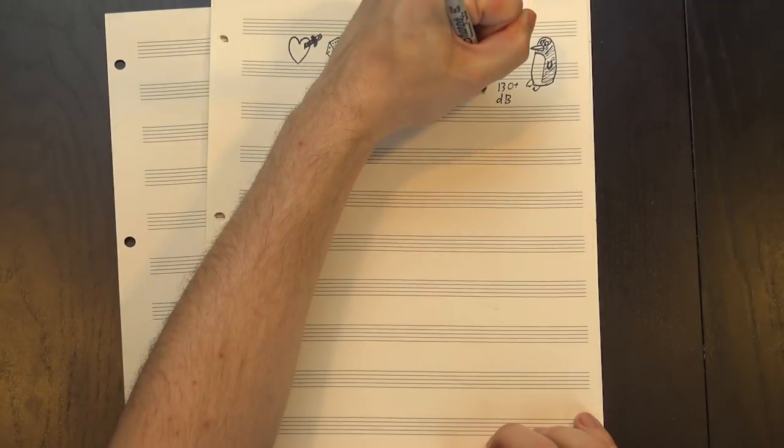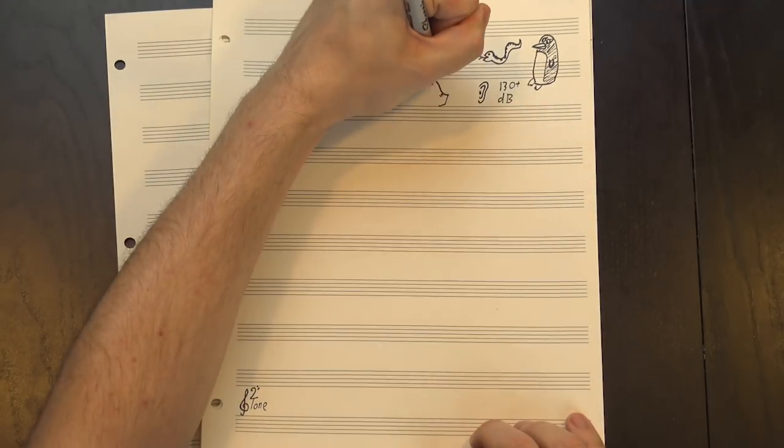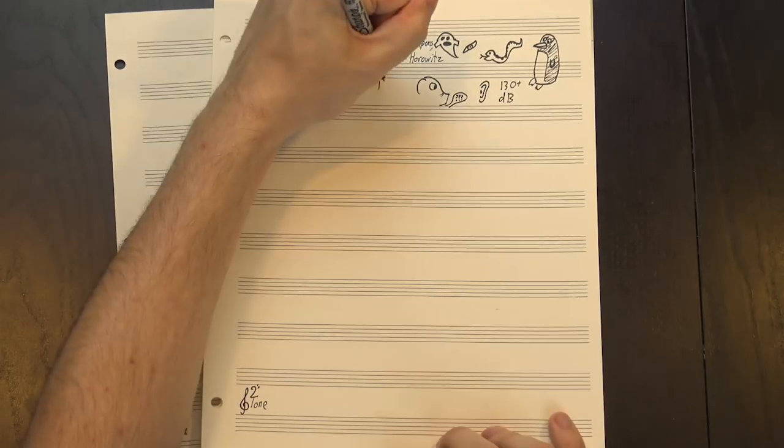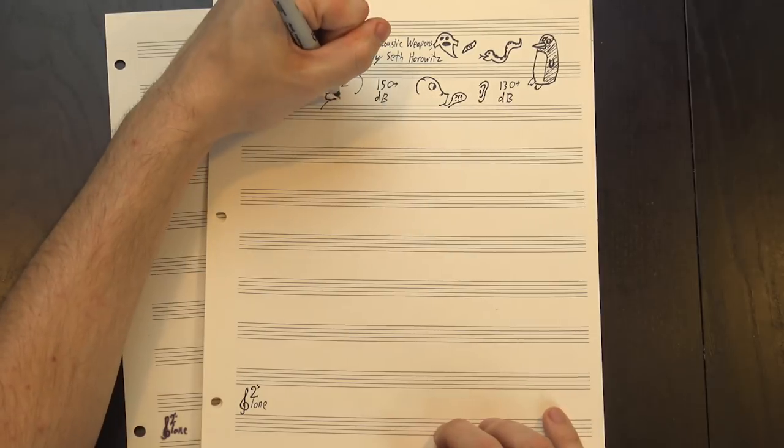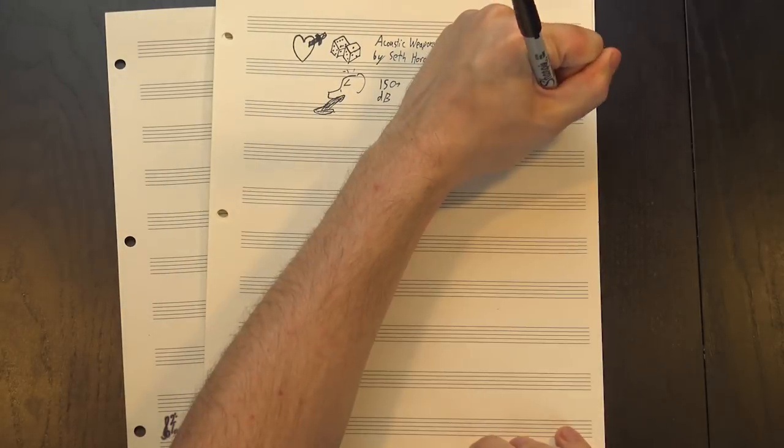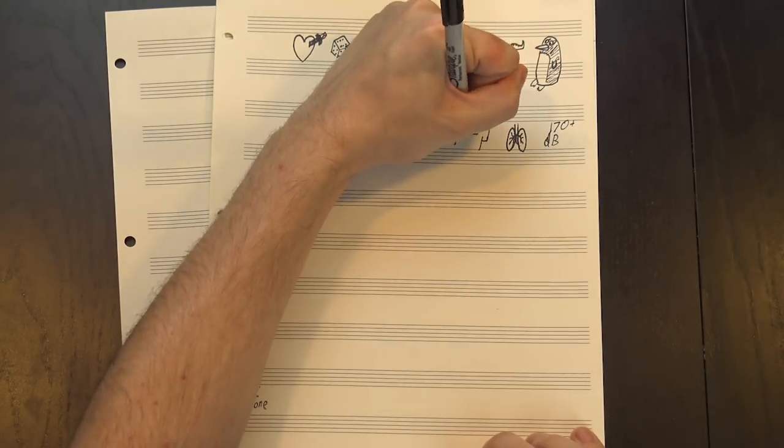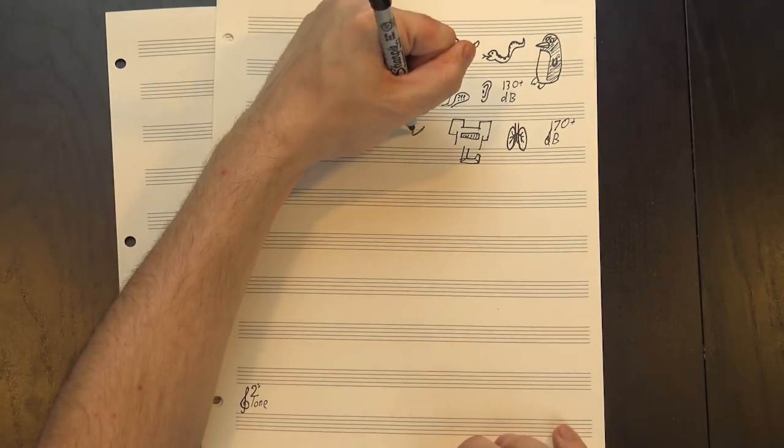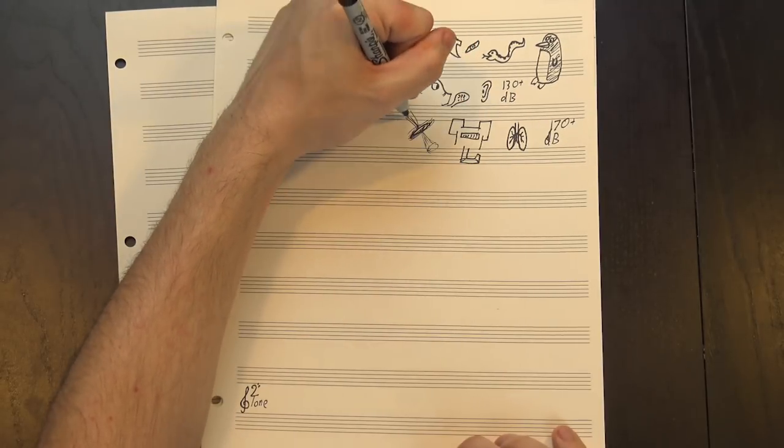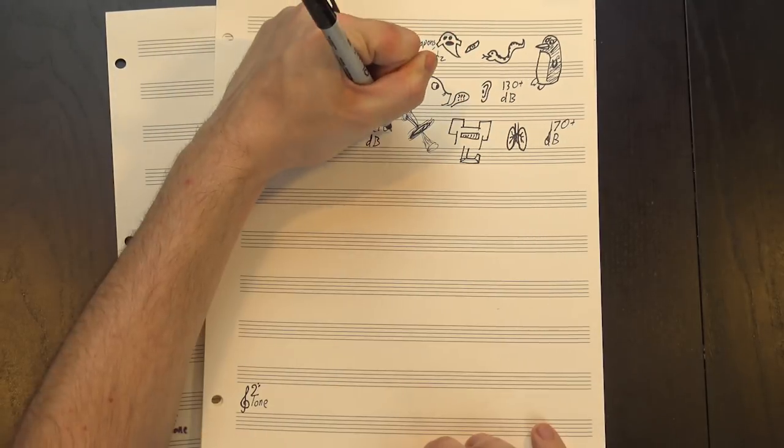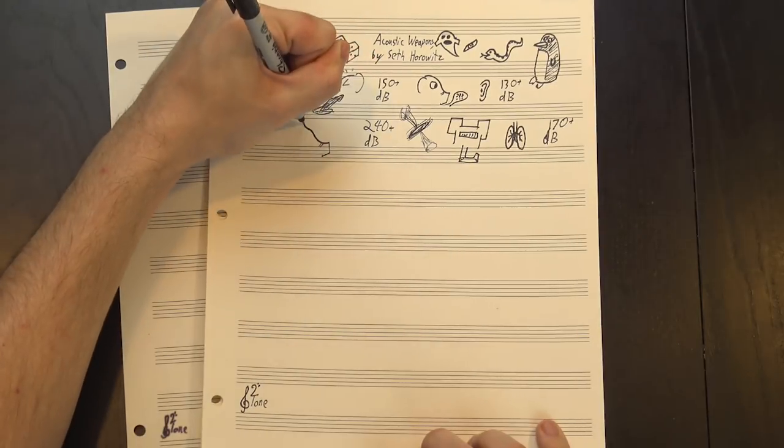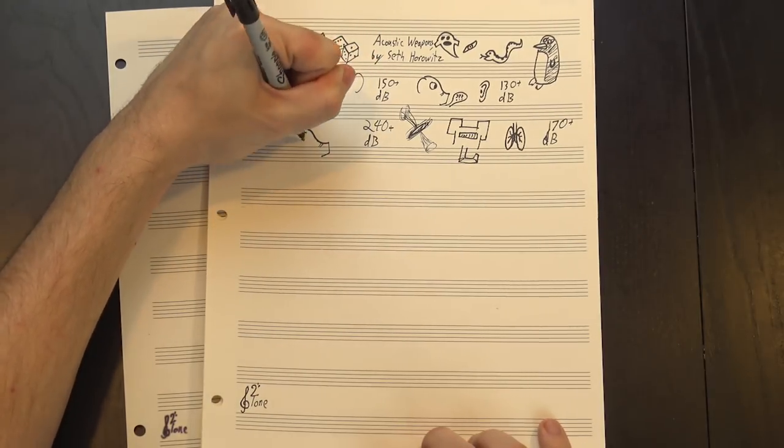At around 130 decibels, infrasound can disrupt your inner ear, messing with your ability to understand speech. 150 decibels causes whole-body vibrations and possibly nausea. At around 170 decibels, the air in your lungs could start to warp, making it hard to breathe and maybe even inducing artificial respiration as the pocket of air expands and collapses in time with the infrasonic wave. And at 240 decibels, with the right frequency, it's possible you could shake a human head so violently it explodes.